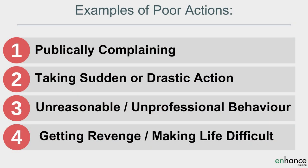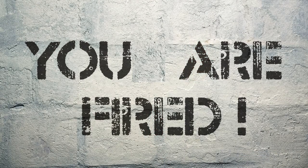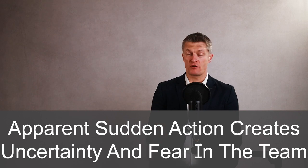There are many negative actions you need to avoid to maintain or improve the trust the team have in you. Examples of poor actions include: publicly complaining about the bad staff member; taking sudden or drastic actions such as firing them on the spot; engaging in unreasonable or unprofessional behaviour towards the problem employee; or getting revenge by giving them all the boring tasks to make their life difficult in the hope they'll leave. Apparent sudden action creates uncertainty and fear in the team — they will think, 'if I make a mistake, will I be fired?' Risk-taking and learning then drop, followed by team performance.